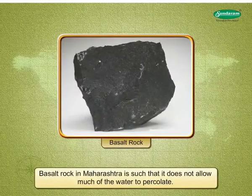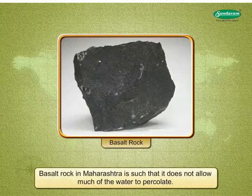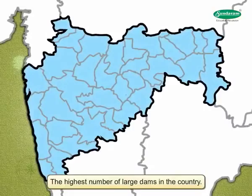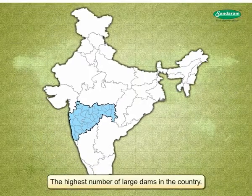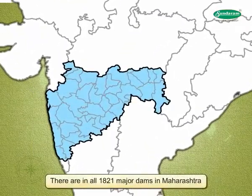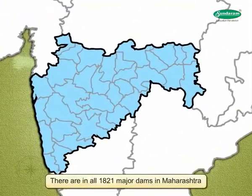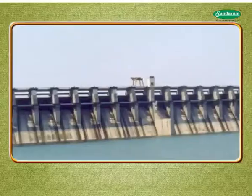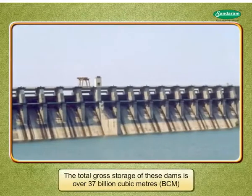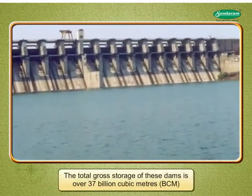Basalt rock in Maharashtra is such that it does not allow much of the water to percolate. Dams having a height of 10 meters and above are called large dams. Maharashtra has the highest number of large dams in the country. There are in all 1,821 major dams in Maharashtra, with a total gross storage of over 37 billion cubic meters (BCM).